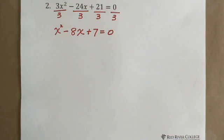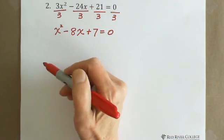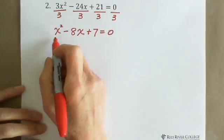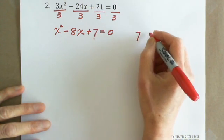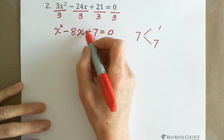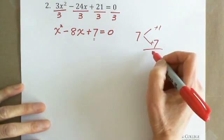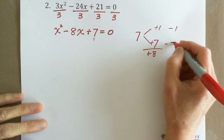This is a very important skill: when solving equations or doing factoring, always check for a common factor first and divide it out or pull it out. Now looking at x squared minus 8x plus 7 equals 0: the constant 7 has only one factor pair, which is 1 times 7. Positive 1 plus positive 7 gives positive 8, but we need negative 8, so we use negative 1 and negative 7.